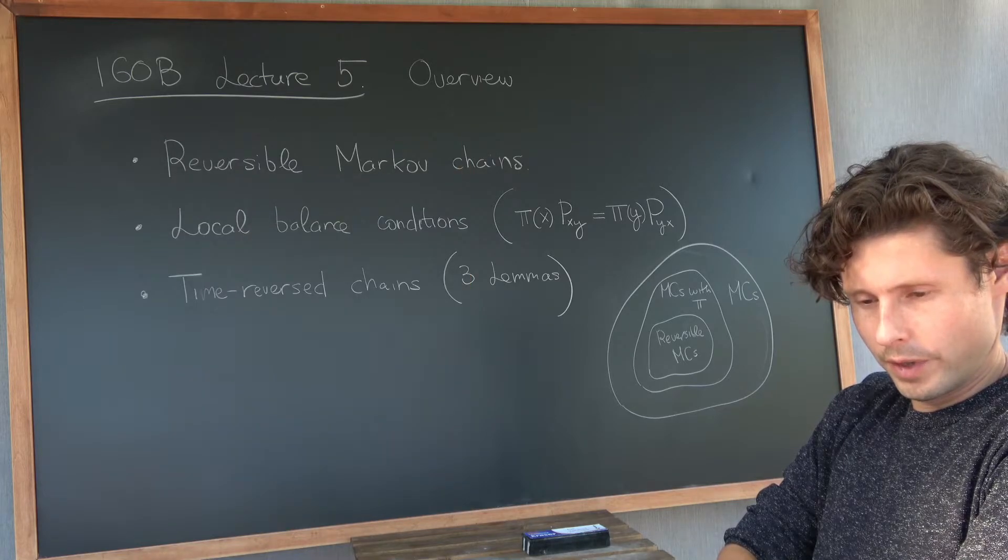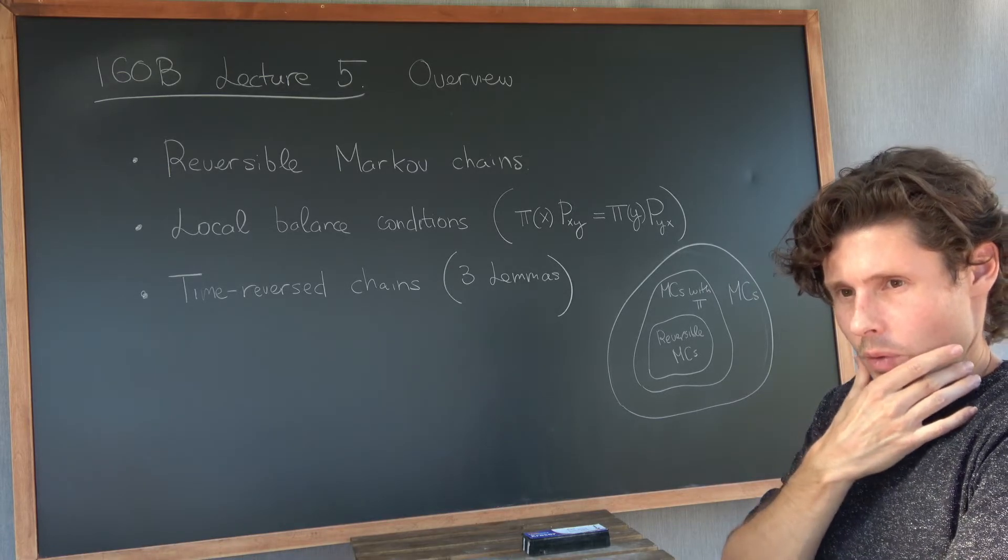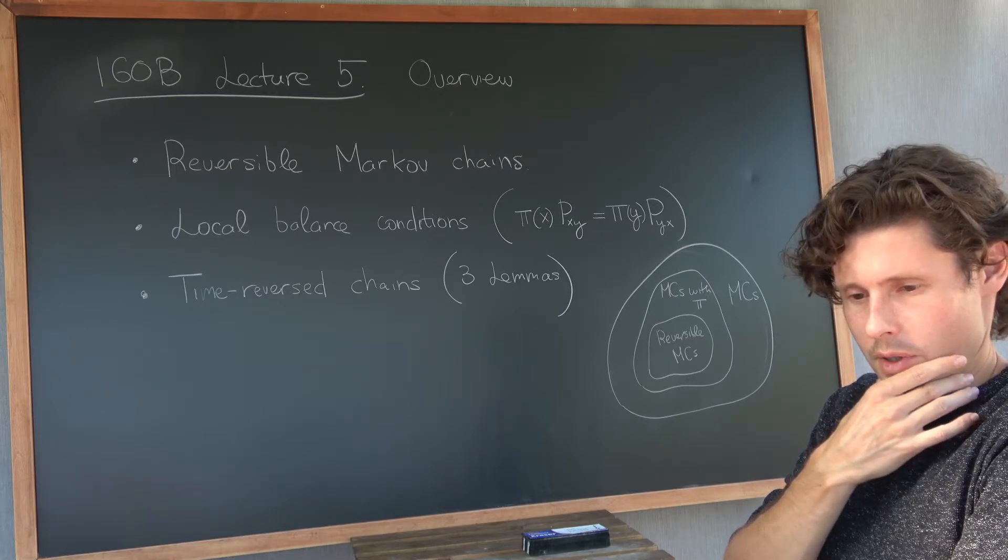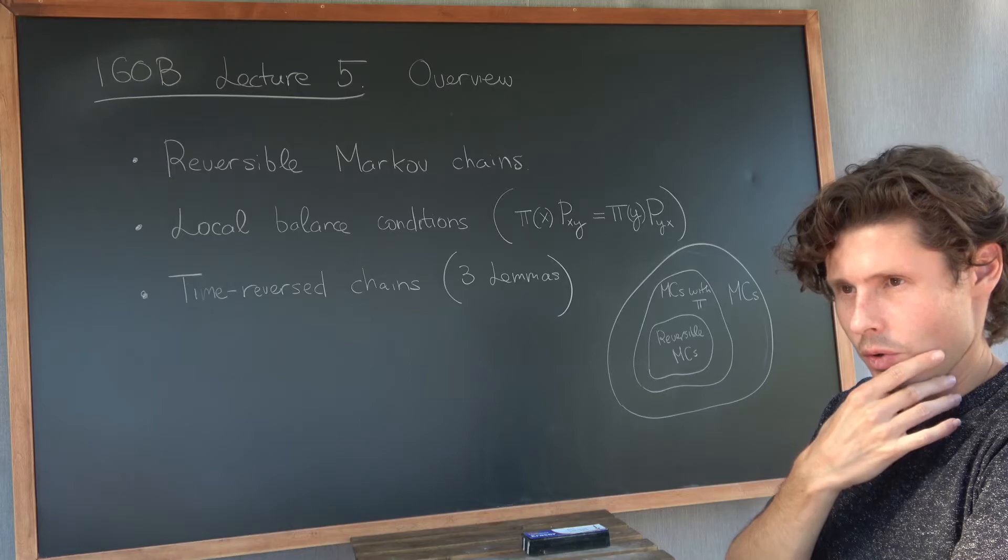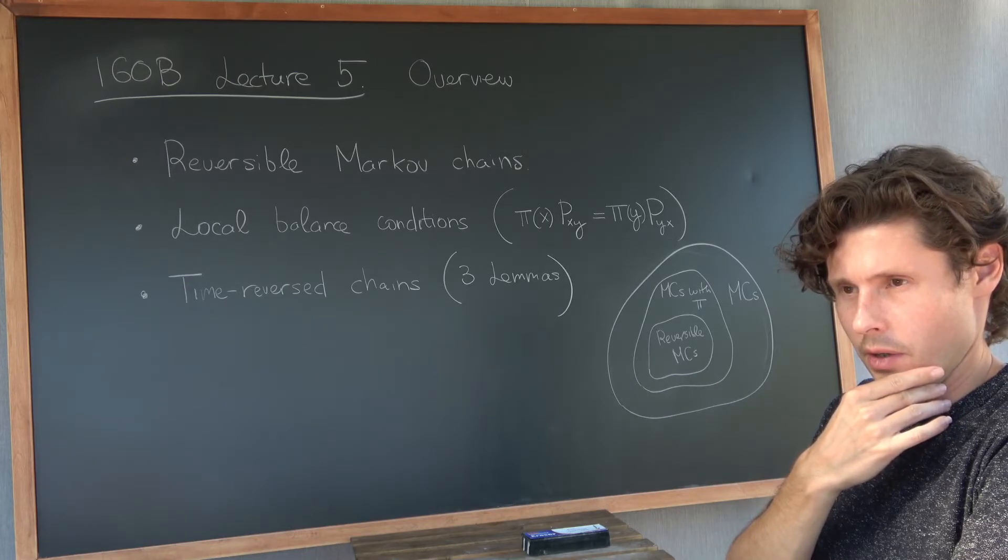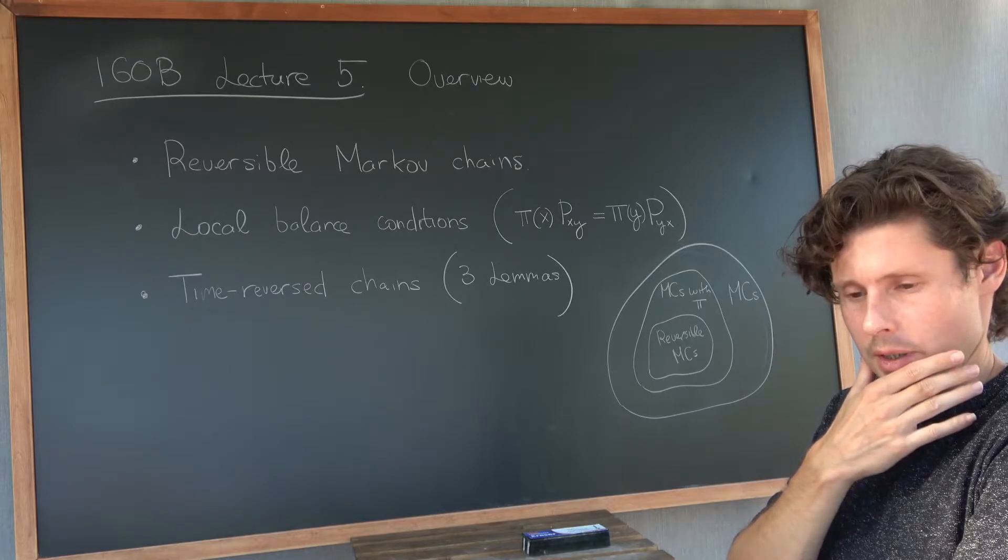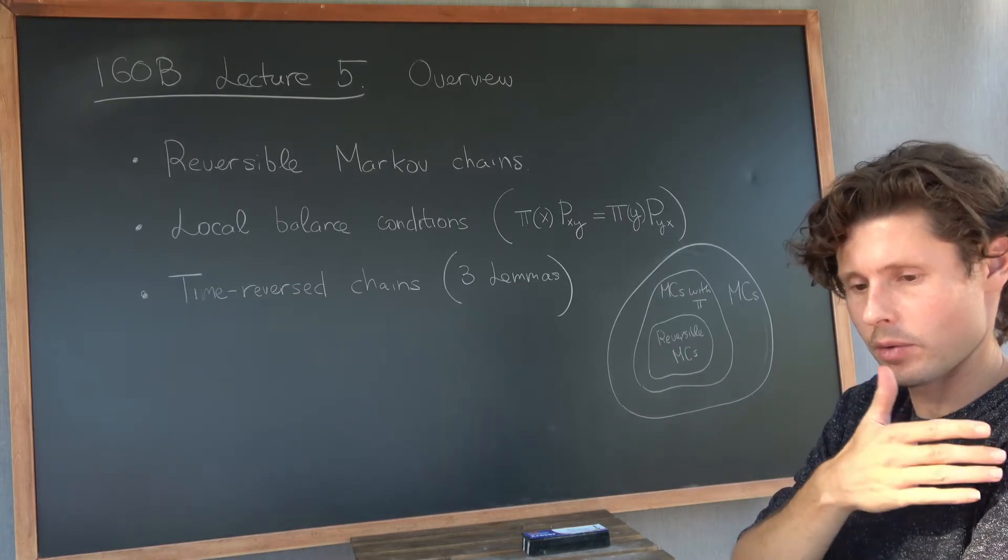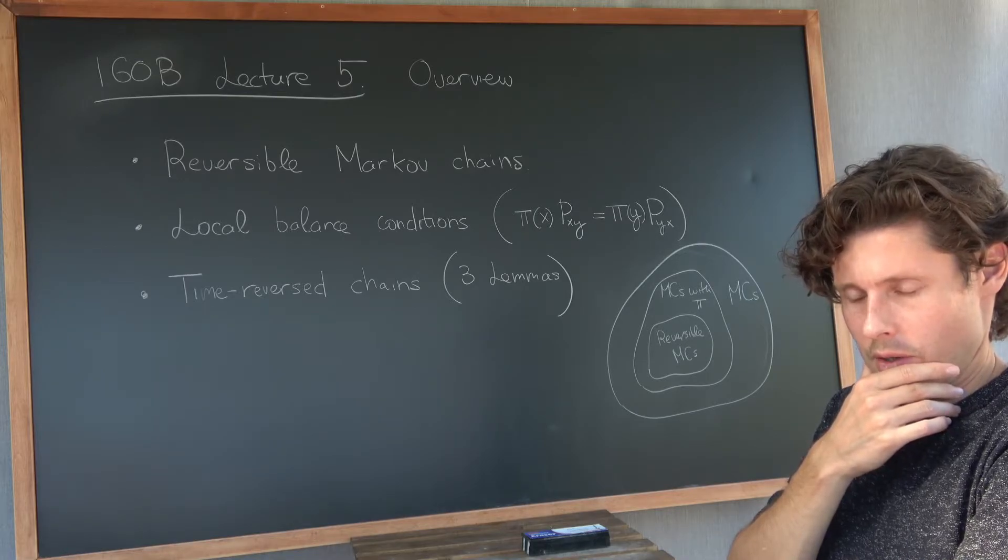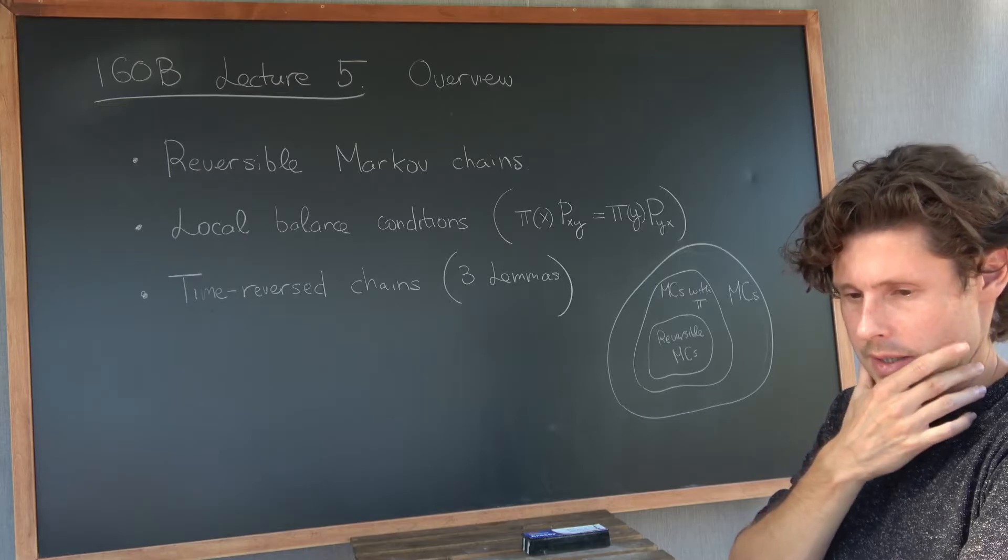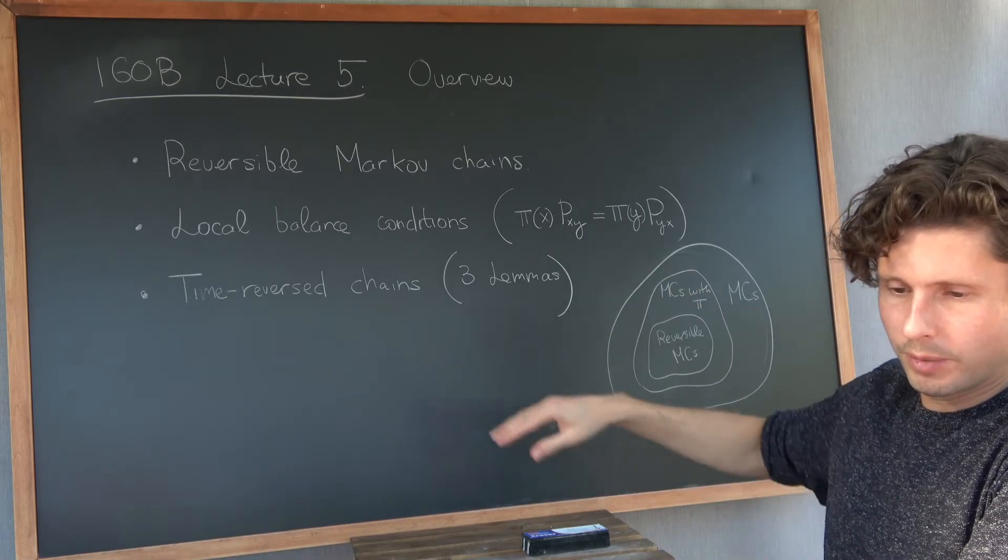So hopefully that gives you a little bit of an intuition. Being able to tell the direction in which time is moving is this key notion of irreversibility. Whereas reversible processes are those that given a video recording of how they're moving, you cannot tell if the movie is being played forward or backwards. And so that's the main intuition behind all this. Our goal in this lecture is to make all this precise mathematically and tie it to these local balance conditions. I'll start doing that in terms of this concept of time reverse chains.